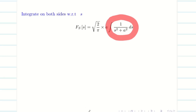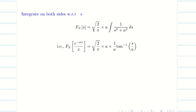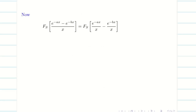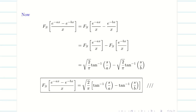We need to integrate a/(s²+a²) with respect to s. Recall the classical formula: the integral of 1/(x²+a²) dx equals (1/a) tan⁻¹(x/a). Here a is constant and s is the variable, so the integral gives (1/a)·tan⁻¹(s/a), and the a's cancel, yielding the answer √(2/π)·tan⁻¹(s/a). Similarly, we write the result for e^(-bx)/x. Finally, for F_s of (e^(-ax) - e^(-bx))/x, applying linearity and taking √(2/π) common, the answer is √(2/π)·[tan⁻¹(s/a) - tan⁻¹(s/b)].